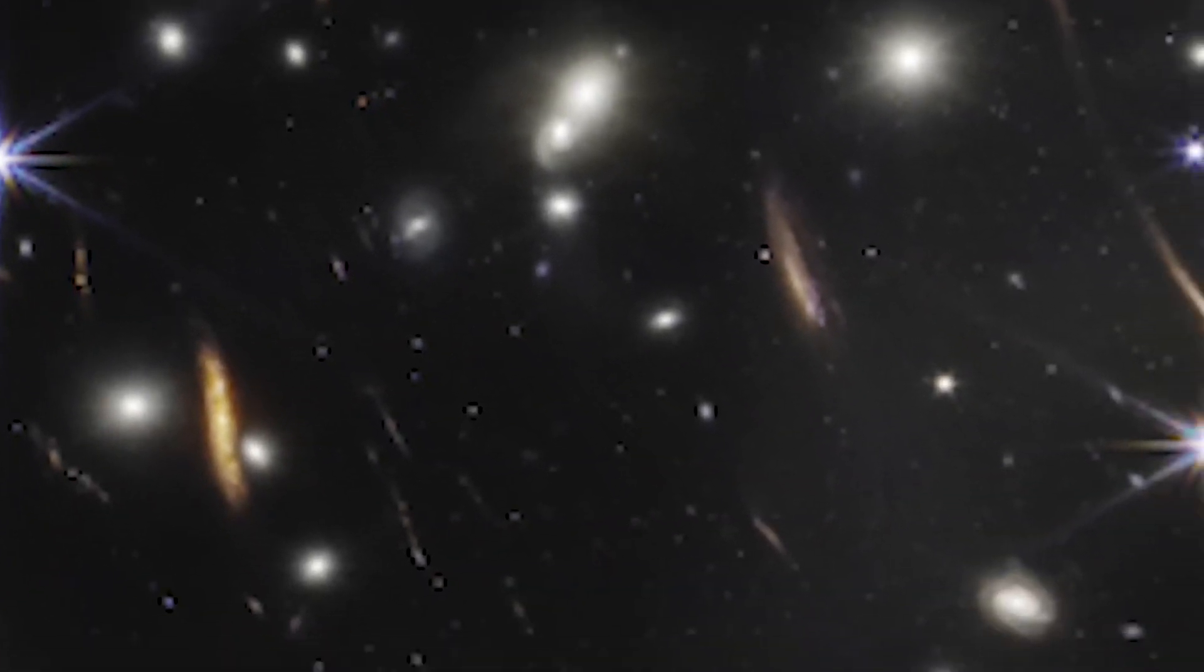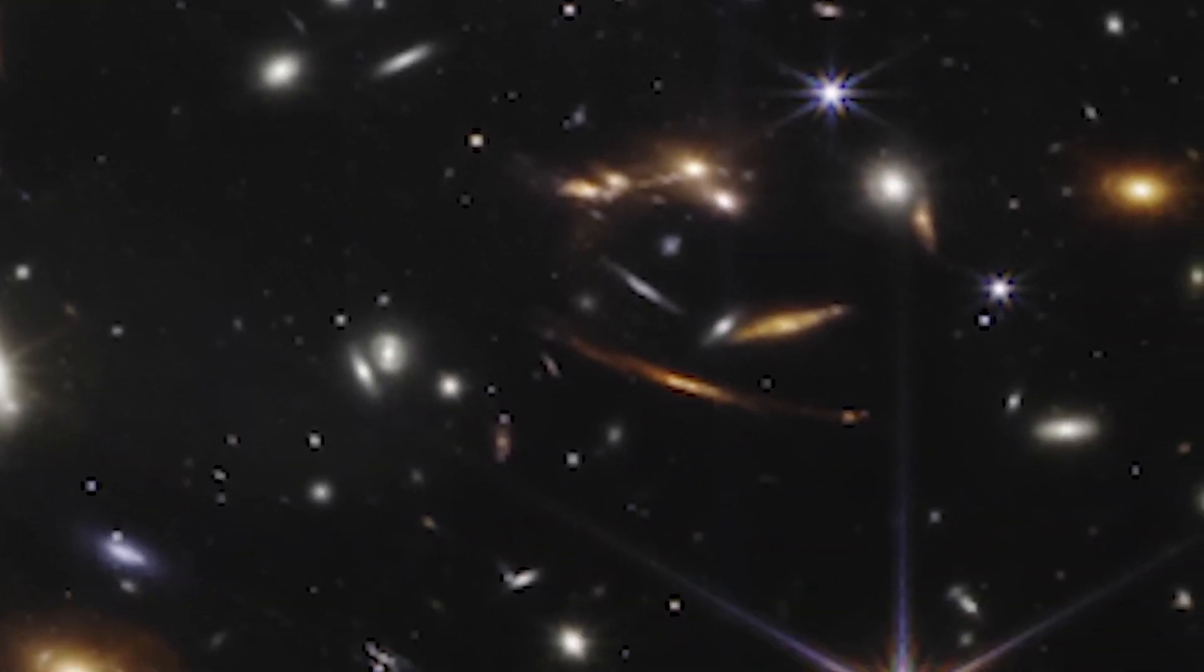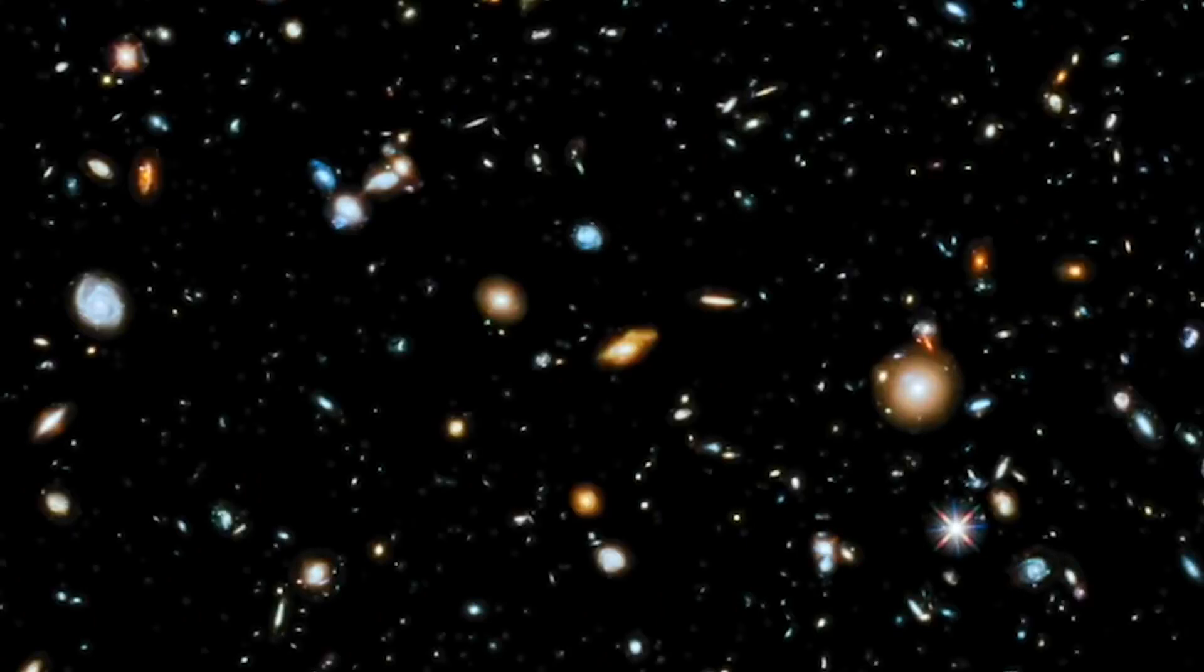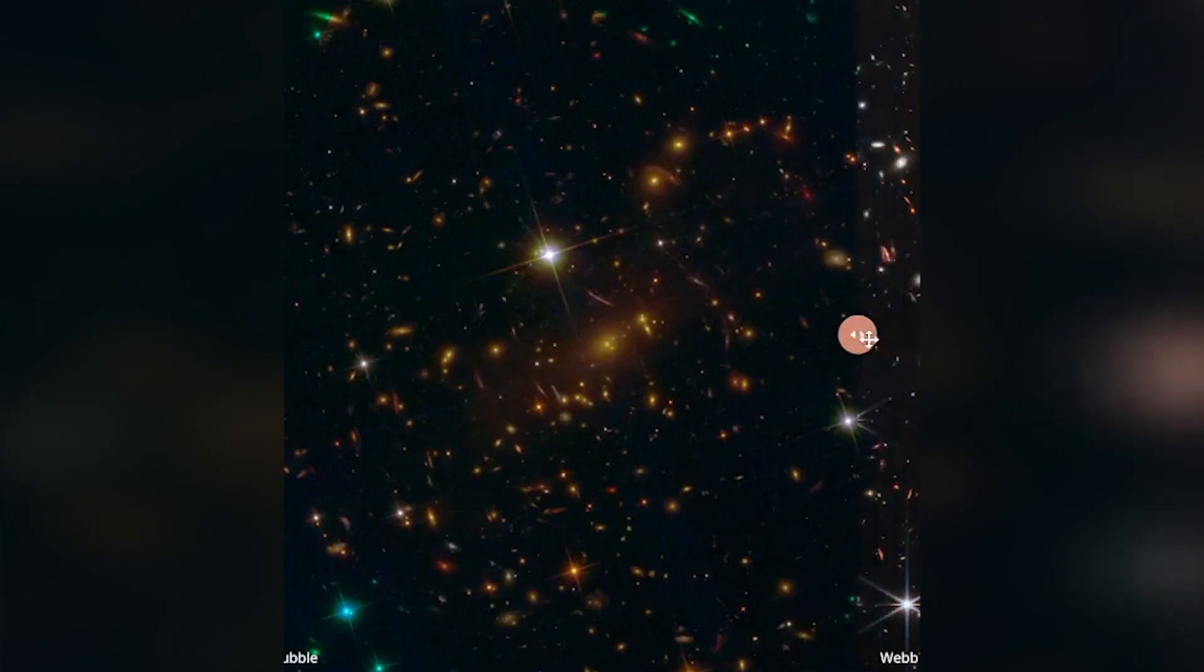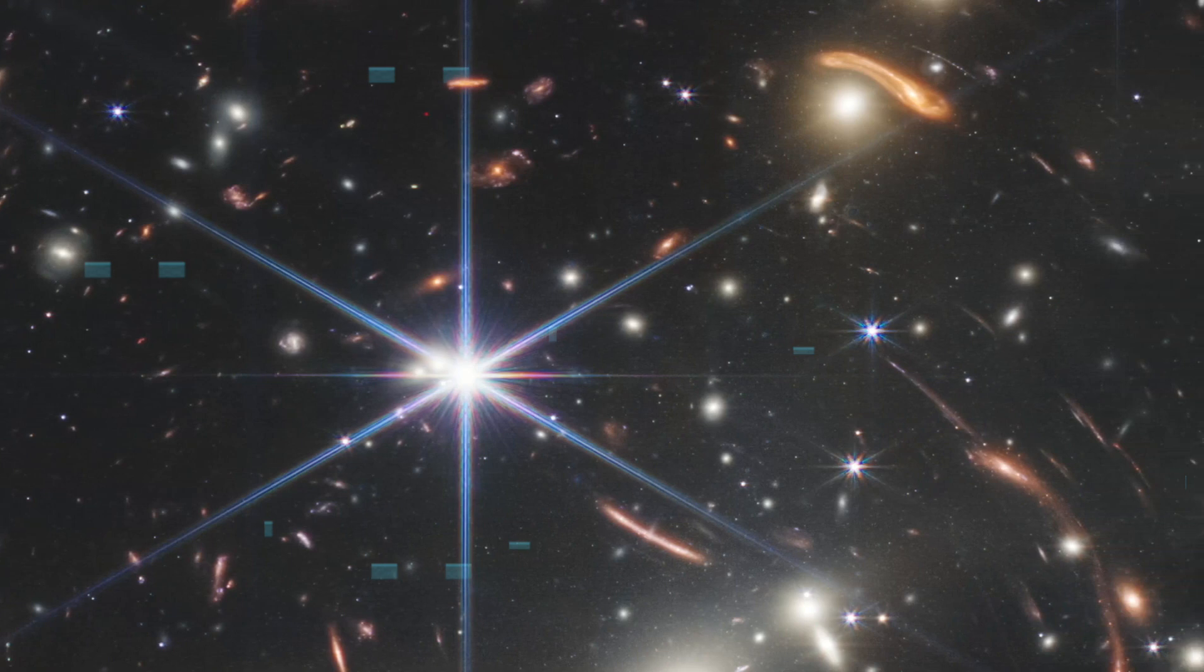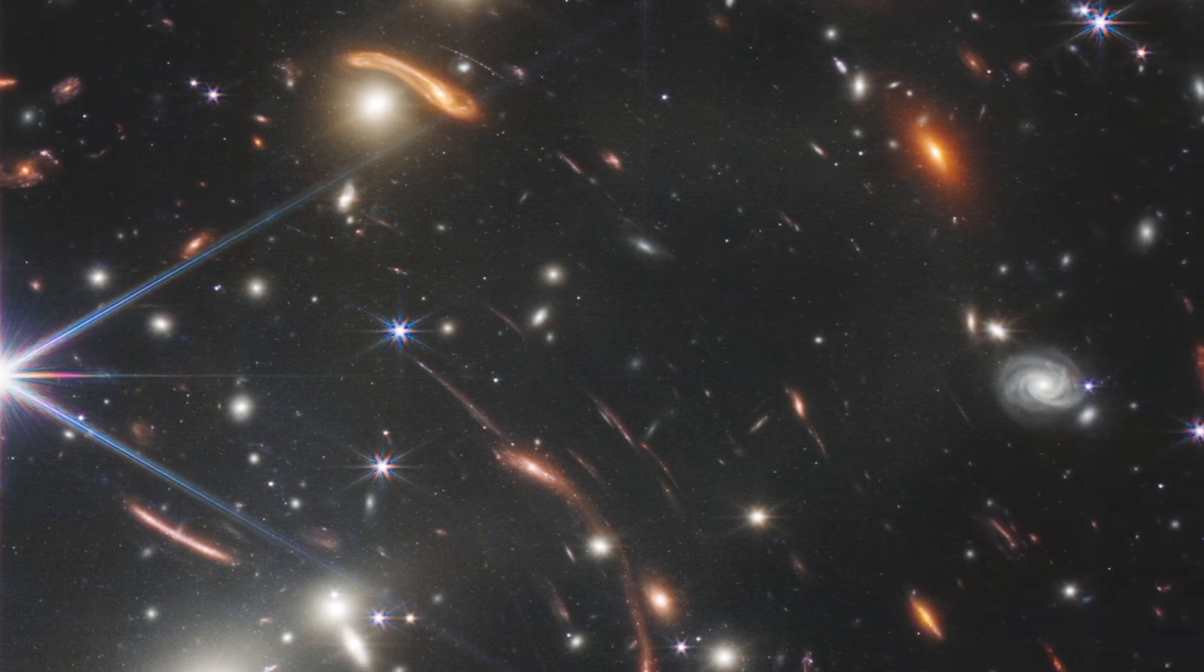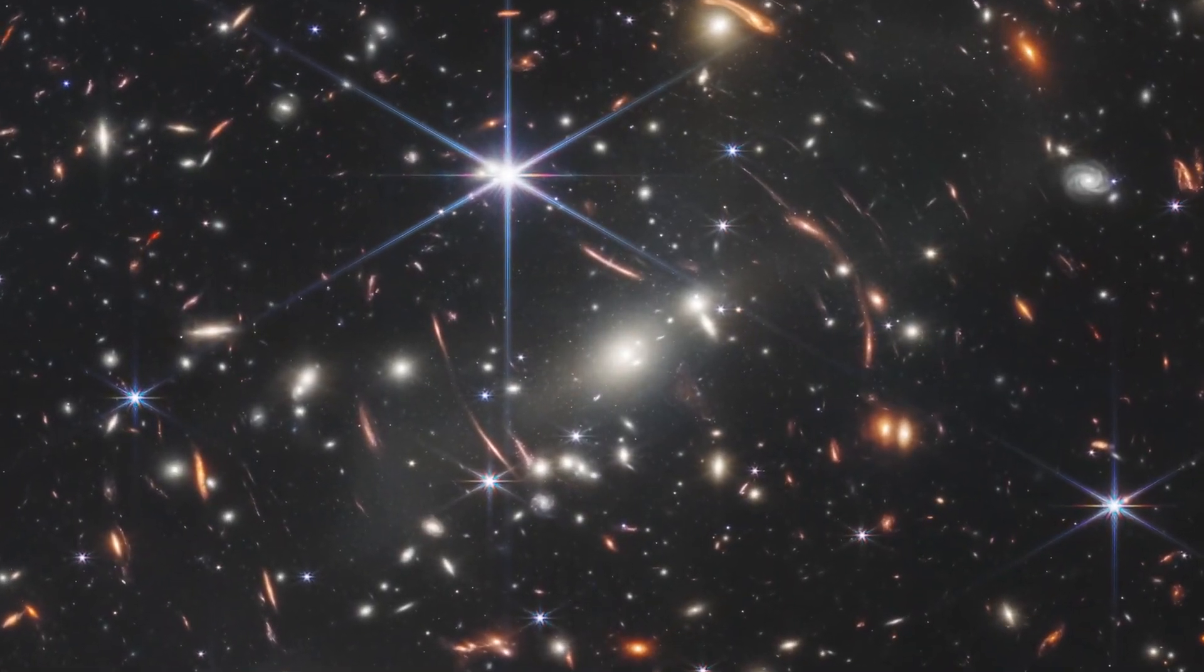The image shows the galaxy cluster SMACS 0723 as it appeared 4.6 billion years ago. The combined mass of this galaxy cluster acts as a gravitational lens, magnifying much more distant galaxies behind it. Webb's near-cam has brought those distant galaxies into sharp focus. They have tiny, faint structures that have never been seen before, including star clusters and diffuse features. Researchers will soon begin to learn more about the galaxy's masses, ages, histories and compositions, as Webb seeks the earliest galaxies in the universe.